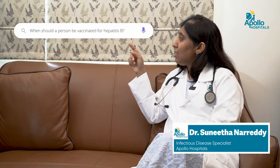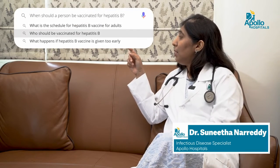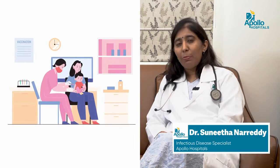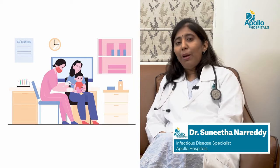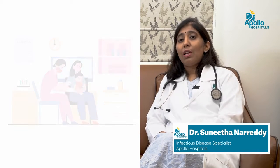When should a person be vaccinated for hepatitis B? WHO recommends that every child born should receive the first dose of hepatitis B vaccine within 24 hours after birth, and should complete a three or four dose series within the first six months of life. Once a person receives the hepatitis B vaccine series, they are protected for at least 20 years and probably lifelong.